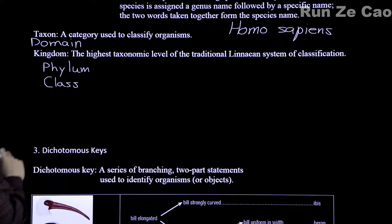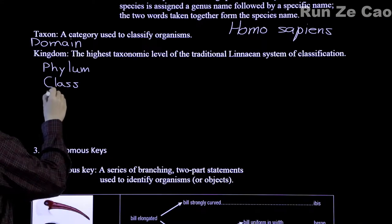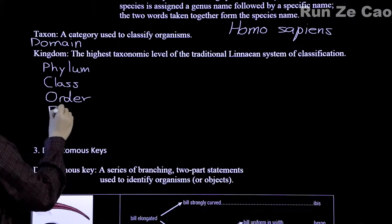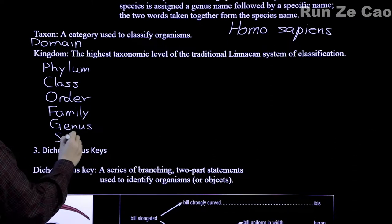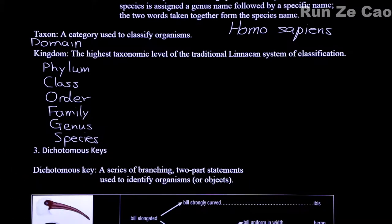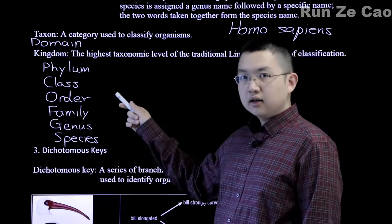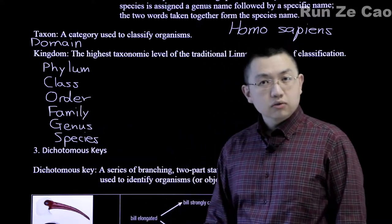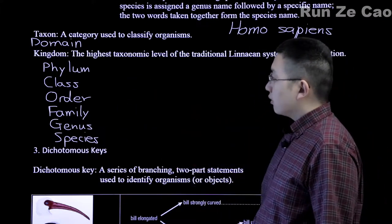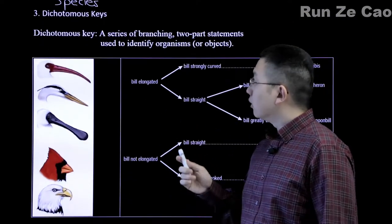There are also intermediate labels between the main categories — for example, between insects and arthropods there are labels such as hexapods. The main taxonomic levels used are order, family, genus, and species — taxa being the plural. Dichotomous keys involve splitting into twos: classifications that branch into pairs, such as bill straight versus bill strongly curved, which can then further split into elongated or not elongated.